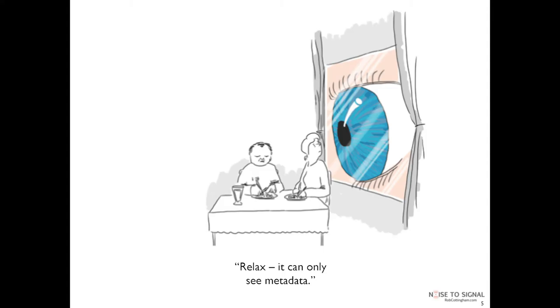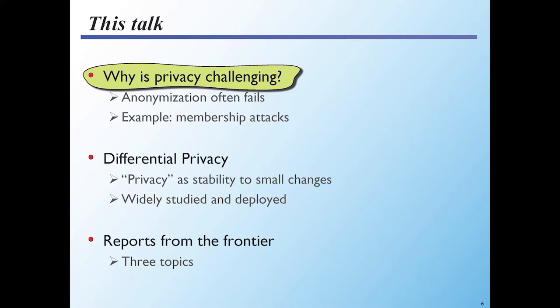I really think privacy remains a very important question. This talk will start by explaining why privacy is challenging in the context I'll be discussing — why anonymization is problematic — and I'll talk about the ways statistical and learning models leak information. I'll then talk about differential privacy, which Dove mentioned, and end with some reports from the frontiers — a few topics of current research that are very active right now that I think are interesting.